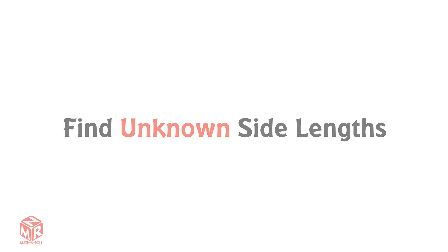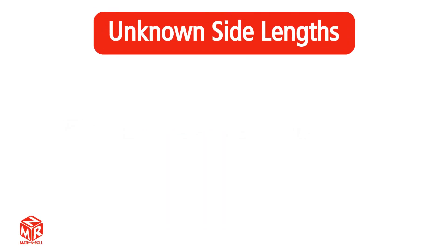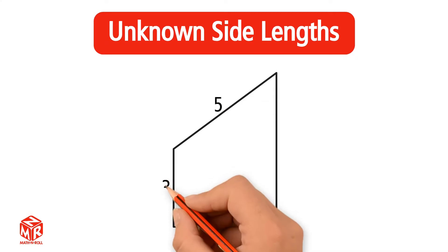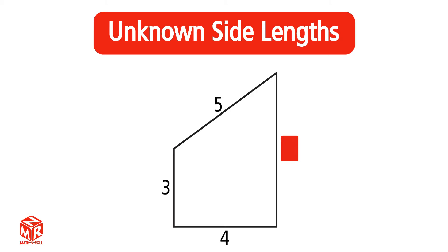Find unknown side lengths. What is an unknown side length? An unknown side length is a side that does not have a known length. Instead of being labeled with a number, it's labeled with a symbol or a letter, such as A, B, C, and so on.